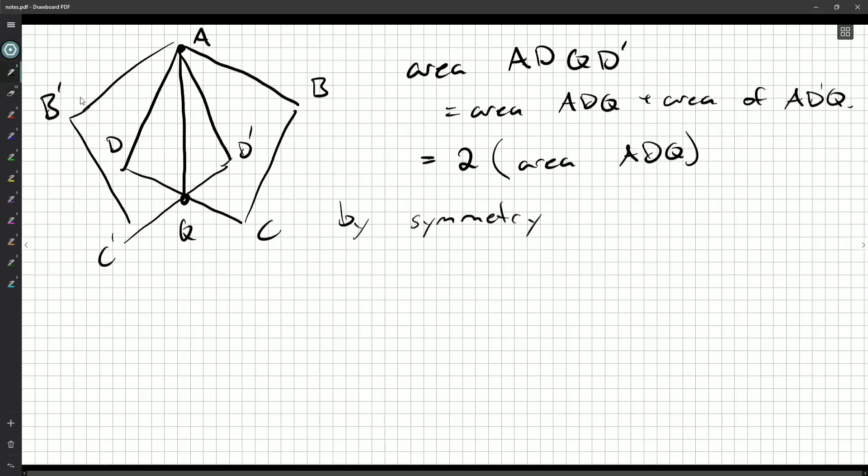And this makes the question very easy. Because then you could say something like notice angle ADQ is 90 degrees. Length AD is four. Length DQ is CD over two, because it's a midpoint. So that's four over two or two. So the area of ADQ is one half base times height. It's going to end up being four.